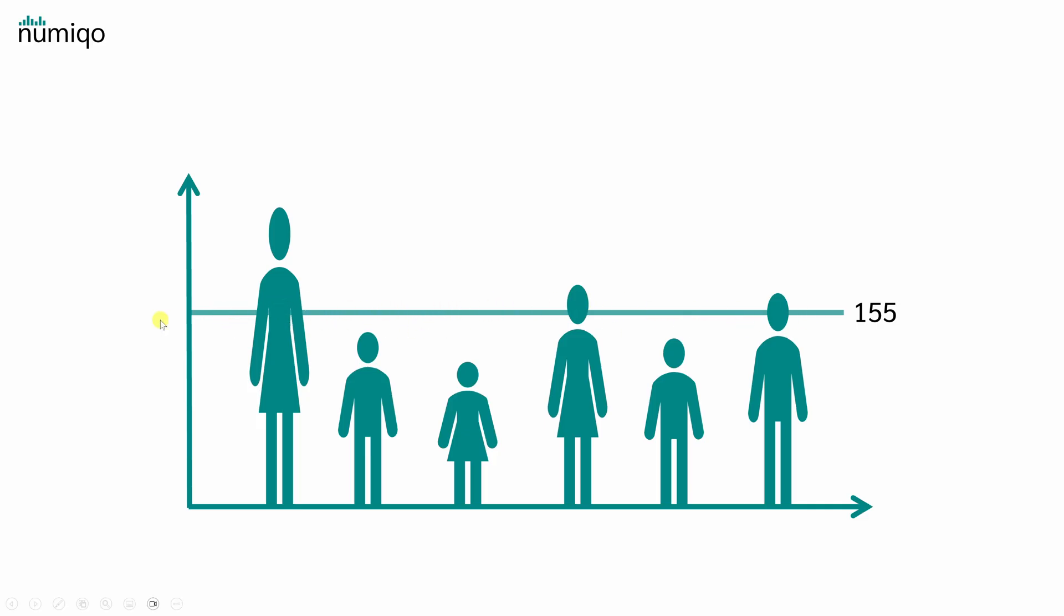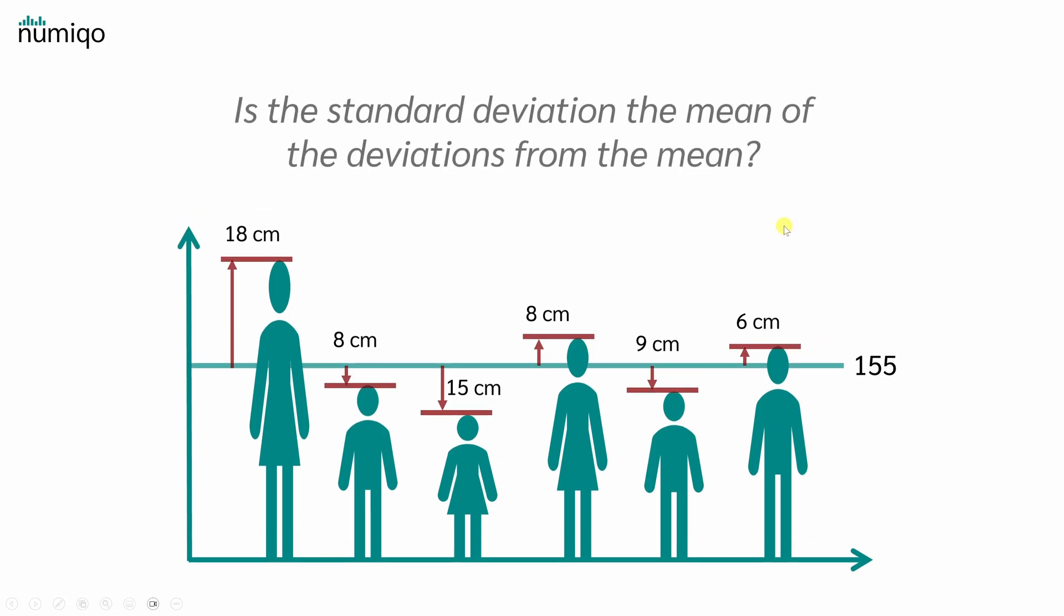Now after calculating the mean we can calculate the deviation of each person from the mean. So the first person deviates 18 from the mean, the second 6, and so on and so forth. Now we can ask the question: is the standard deviation really just the mean of the deviations from the mean? In our example that would mean that the standard deviation is just the mean of this data. So we simply calculate the mean of these six values.